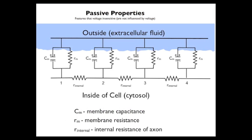One final point: this illustration is for what are called passive properties. In this situation, there are no voltage-sensitive channels at all — nothing is gated or changed by voltage. Things just pass down the membrane passively. Features that are voltage-insensitive are known as passive properties, and those that invoke voltage-gated channels where things change dramatically are called active processes. What we're talking about here are simply the passive properties of an axon.